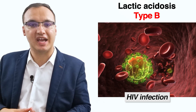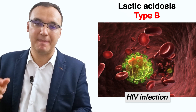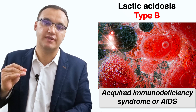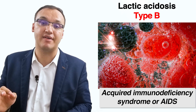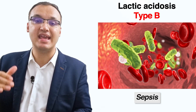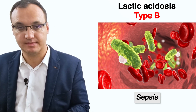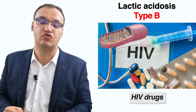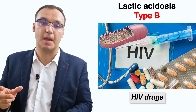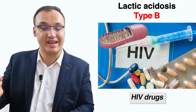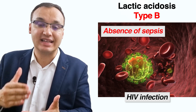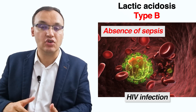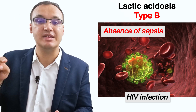Another cause of type B lactic acidosis is HIV infection. In patients with acquired immunodeficiency syndrome, or AIDS, it is common to have severe infections that may lead to sepsis. Also, HIV drugs may disrupt the normal functions of the cells' mitochondria — where energy is produced. Chronic lactic acidosis can occur in the absence of sepsis even in patients with HIV.